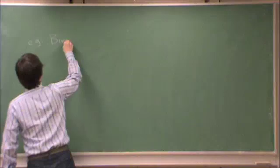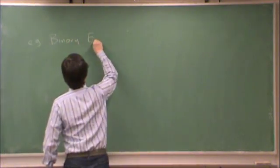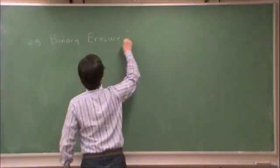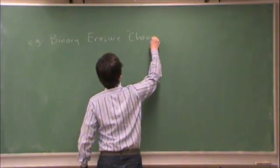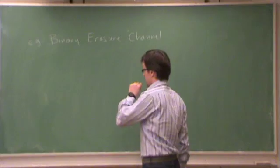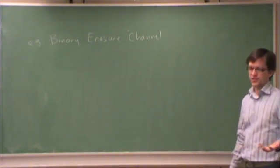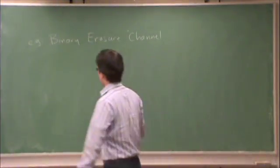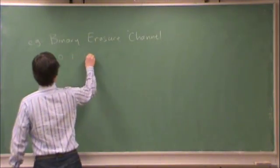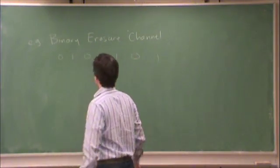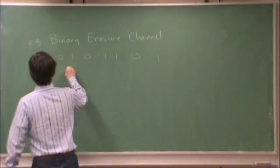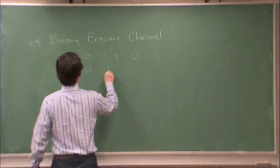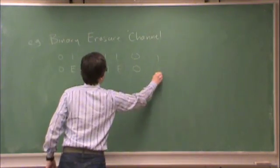You remember the binary erasure channel. So the job of the binary erasure channel for the decoder is, for instance, you send 0101101 and you receive 0E01E01 or something.